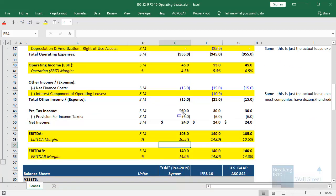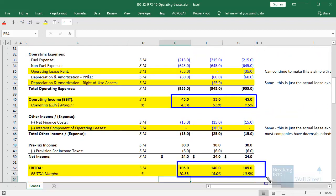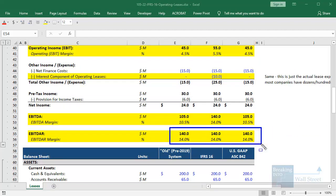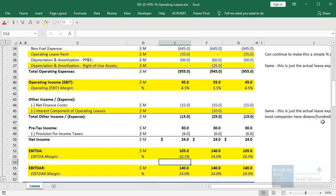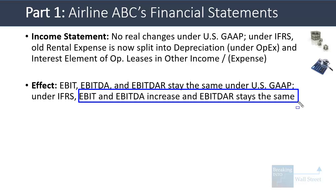As a result, pre-tax income and net income stay the same or very close to the same, but metrics like EBIT and EBITDA change. Interestingly, EBITDA is the same under all three systems. Under US GAAP, EBIT, EBITDA, and EBITDAR all stay the same regardless of whether you use the pre-2019 or new system. Under IFRS, EBIT and EBITDA increase because you're now excluding components of the operating lease expense, but EBITDAR stays the same because it completely excludes everything relating to leases under both old and new systems.